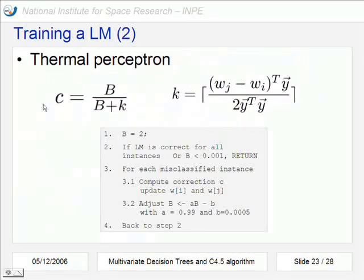Another approach is the thermal perceptron that also uses a constant to update the weights vector but is done this way. Here we have different equations. Here we have different equations and the algorithm starts with this value of b. And here is the stop criteria that if the linear machine is correct for everybody or this value of b is lower than a certain threshold, it can stop.